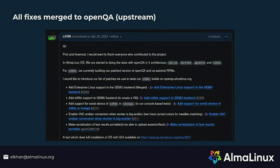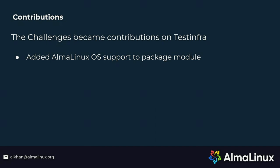All fixes were merged to OpenQA upstream. Please pay attention to the bottom part of the screenshot — when we create a pull request, we use our OpenQA instance as proof of work, proving that it works as a test. We refuse to reinvent the wheel. On the TestInfra side, as I said, we had only a single challenge, and adding AlmaLinux OS support to the package model was enough for us to start using it.